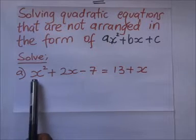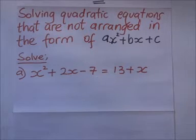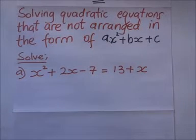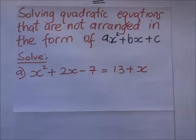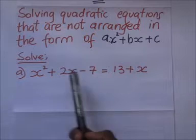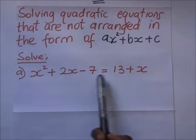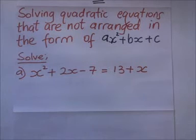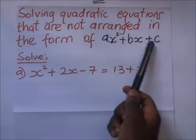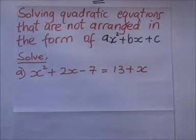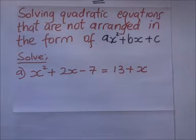So we're being told to solve X squared plus 2X minus 7 is equal to 13 plus X. This is a quadratic equation because the highest power of X is 2. What we do here is we first have to arrange it into the standard form AX squared plus BX plus C equals zero. Only then shall we go ahead and factorize it.